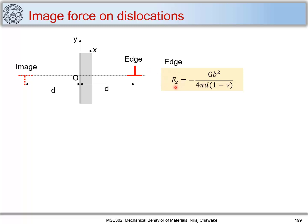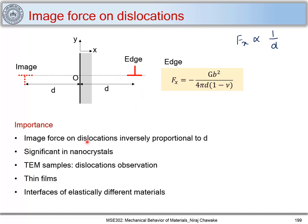In both conditions — for pure edge or pure screw dislocations — what we find is that the force per unit length on the dislocation is inversely proportional to d. The negative sign indicates that the force exerted on dislocations near the surface will be towards the surface, meaning this is an attractive force which acts on dislocations which are near to the surface. If we move too far from the surface, this force will decrease and become insignificant.